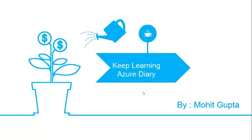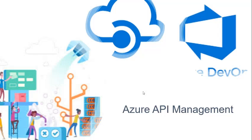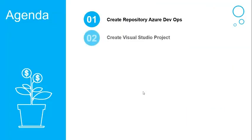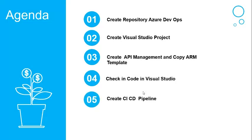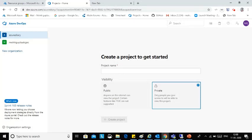Hello friends, welcome to my channel Azure Diary. I'm Mohit Gupta. In this video I am going to show you how to create Azure API management using Azure DevOps. First we are going to create one repository in Azure DevOps, then create one Visual Studio project, create one API management, take the ARM template from the portal, check in that ARM template code in Visual Studio, and then show you how to create the CI/CD pipeline to build and deploy.